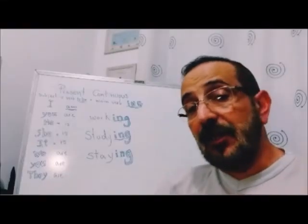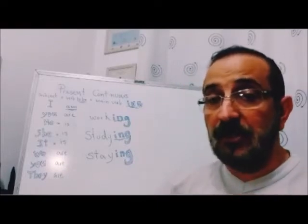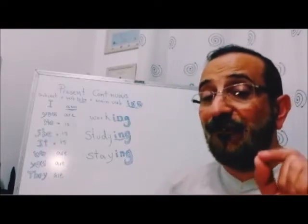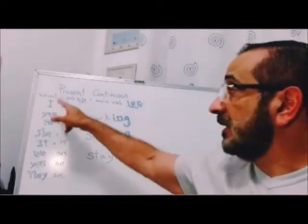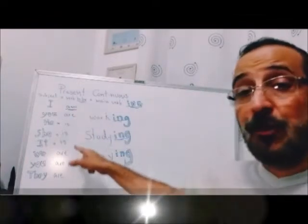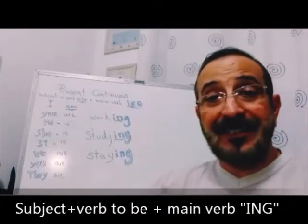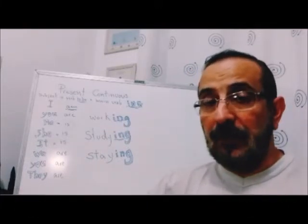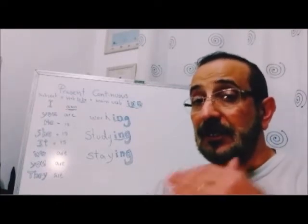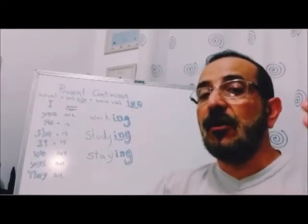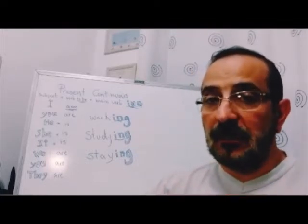Claro que existem outras formas do inglês que levam -ing também, mas não tem nada a ver com present continuous. Então tome cuidado. Só vai ser present continuous se tiver subject, verb to be, and -ing at the end of the verb. Otherwise — de outra forma — forget about it. Pode ser outra coisa, pois existem outras situações no inglês em que o verbo também leva -ing e não tem nada a ver com o present continuous.